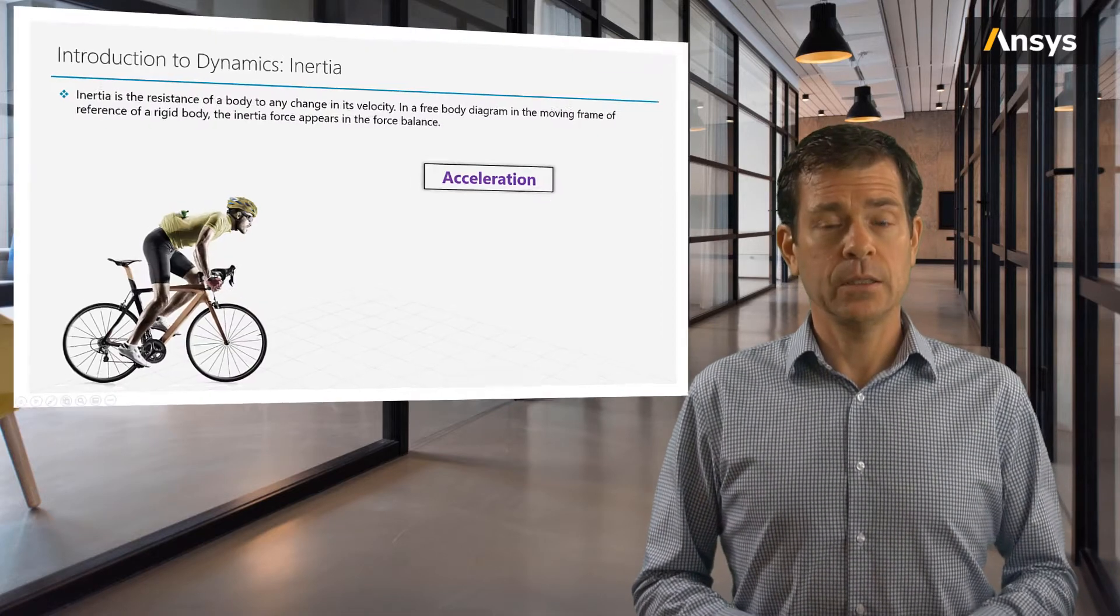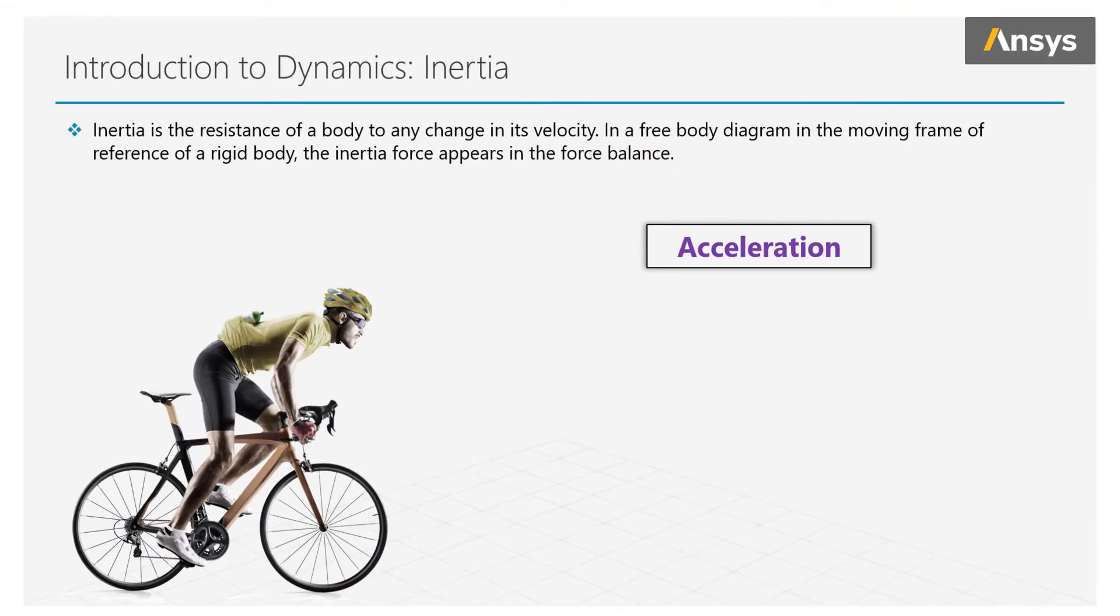In our roller coaster, if our car is heavier, it will require more force to accelerate it, which is pretty intuitive. Essentially, inertia is the resistance of the body to any change in its velocity.